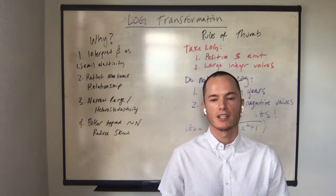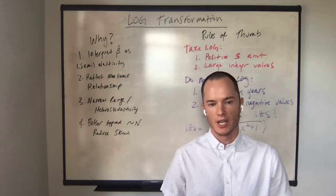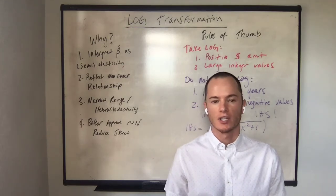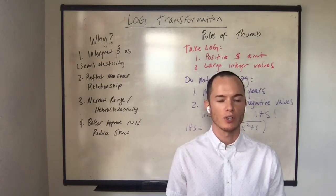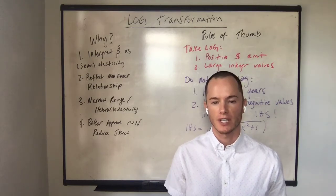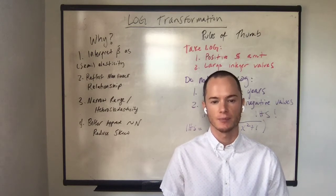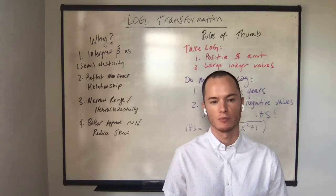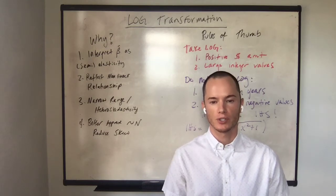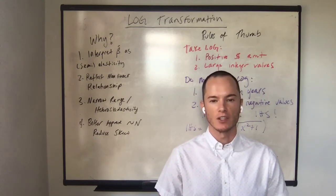The second reason is to reflect a nonlinear relationship between x and y. Third, taking a log transformation will narrow the range or can narrow the amount of heteroskedasticity demonstrated in the data. And fourth, we can get a better approximation of the normal distribution. We can reduce skew by taking the log transformation.